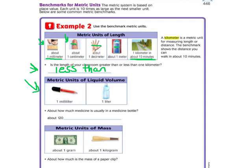All right, here's some more. This kind of looks like the medicine dropper that your parents would give you if you were sick when you were a little baby. And this one liter, it's got the picture there of the water bottle. So that will help you to remember a milliliter and a liter. It says about how much medicine is usually in a medicine bottle. So the medicine bottle is here. 120, and that would be milliliters.